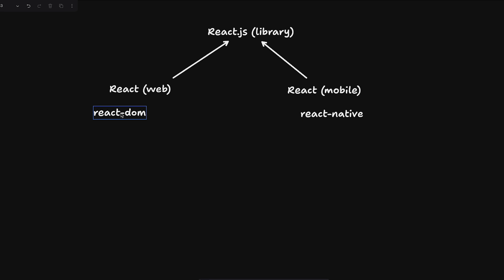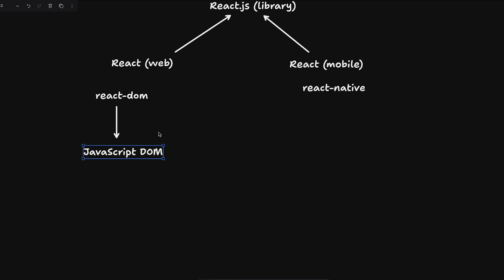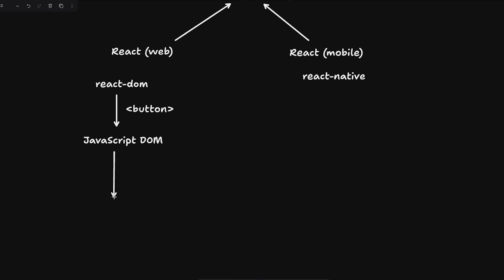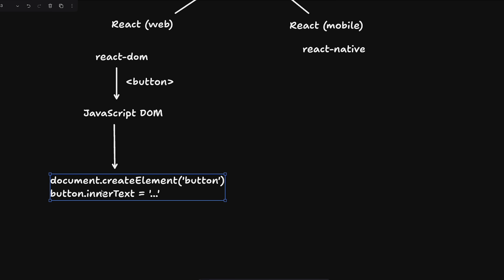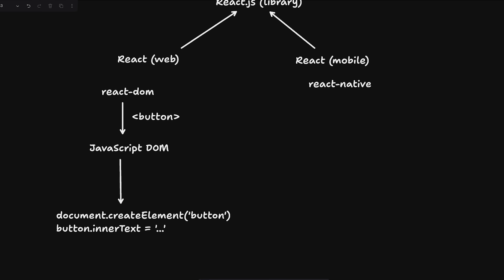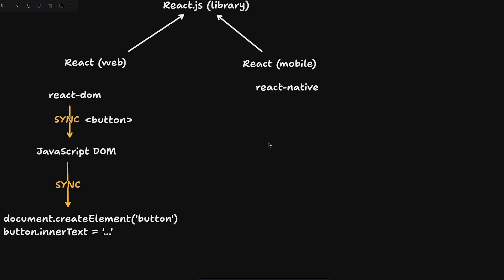The fundamental problem is that React DOM has direct access to JavaScript, which is the scripting language of the web, including the DOM API. So if React DOM sees a button tag in your JSX, it just calls document.createElement('button') and sets textContent — all in a synchronous fashion, which is a huge advantage.